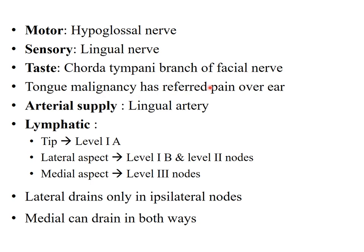Taste is supplied by the chorda tympani branch of the facial nerve. Tongue malignancy can cause referred pain over the ear. The arterial supply is by the lingual artery. Lymphatics from the tip drain to level 1a — the submental lymph nodes — while the lateral aspect drains to submandibular level 1b and level 2, the jugulodigastric or upper deep cervical lymph nodes. The medial aspect drains into level 3 lymph nodes. Lateral tumors drain only ipsilaterally, while midline tumors can drain both ipsilaterally and contralaterally.